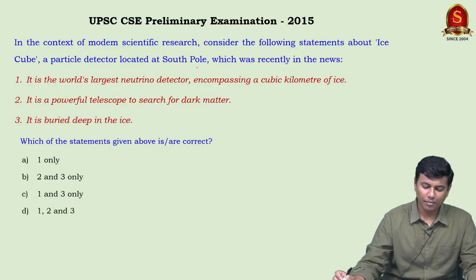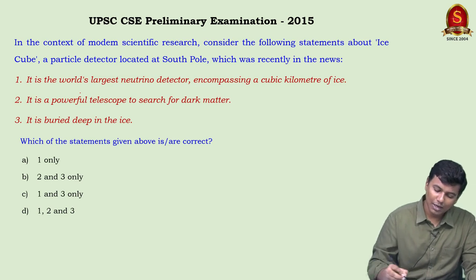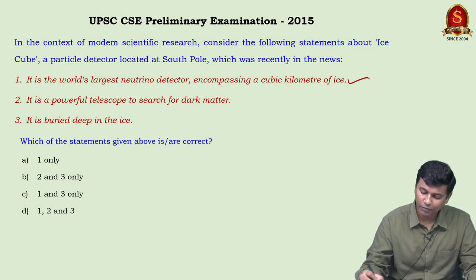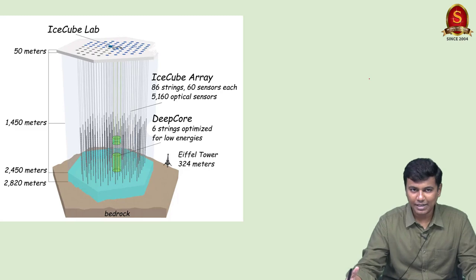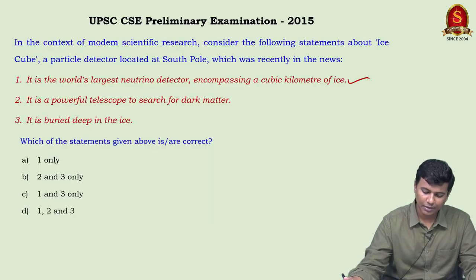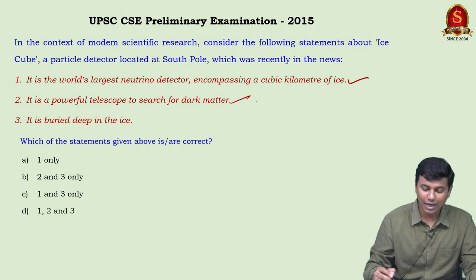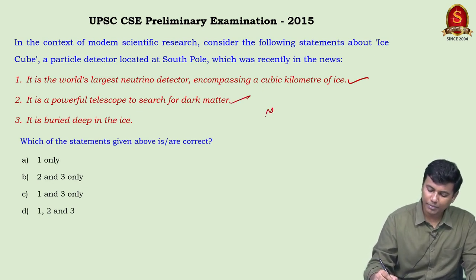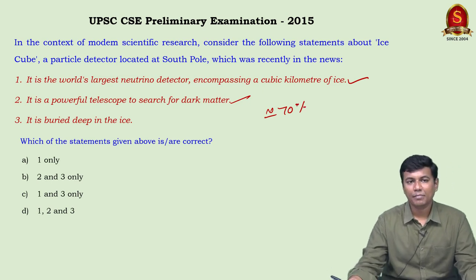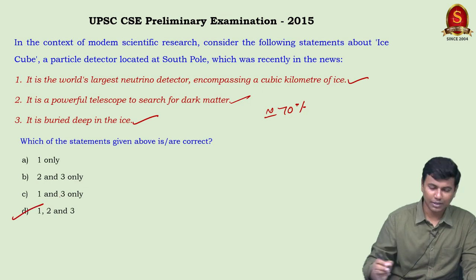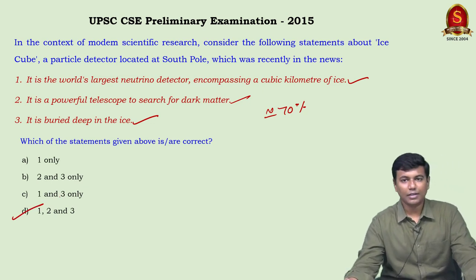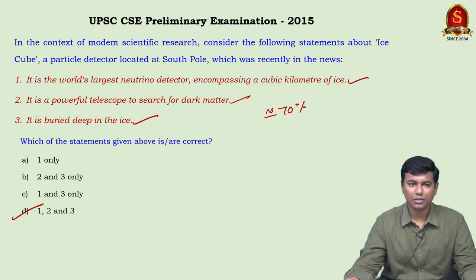From UPSC 2015: about the IceCube observatory. Statement one — it is the world's largest neutrino detector encompassing a cubic kilometer of ice — correct. Statement two — it is a powerful telescope to search for dark matter (approximately 70% of the universe is dark matter) — correct. Statement three — it is buried deep in the ice — correct. All three statements are correct. Answer: D.